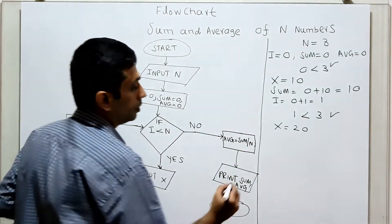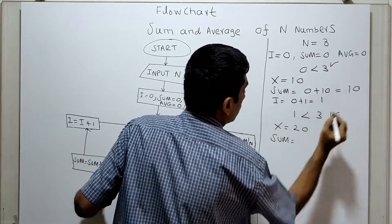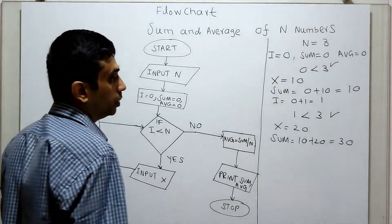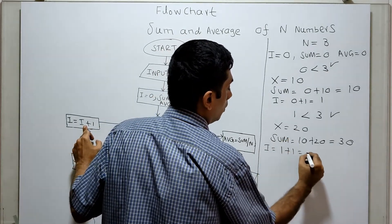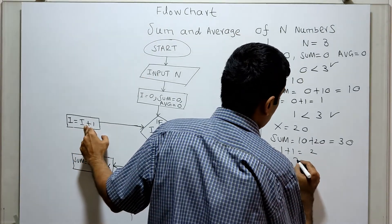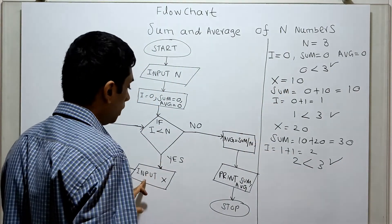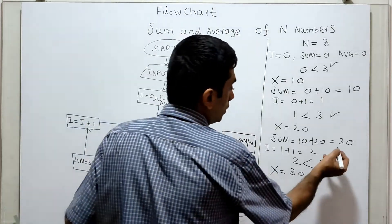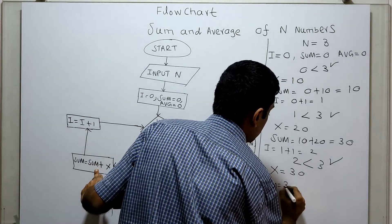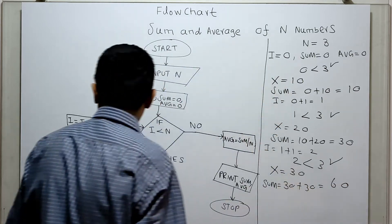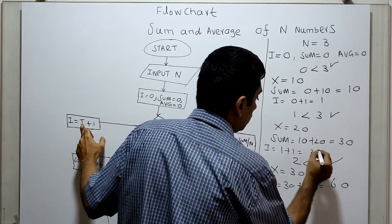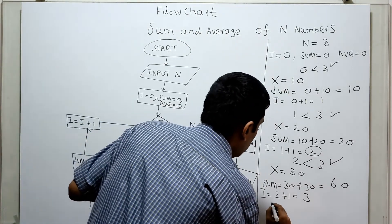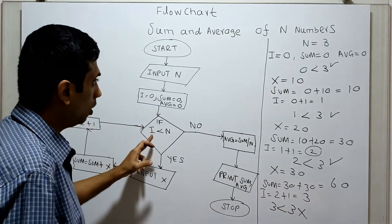sum equal to sum plus x — existing sum is 10, so 10 plus 20 equal to 30. Incrementing i: 1 plus 1 equal to 2. Checking: 2 less than 3 is true. Obtaining input x equal to 30. sum equal to existing sum 30 plus 30 equal to 60. Incrementing i: 2 plus 1 equal to 3. Checking: 3 less than 3 is false — coming out of the loop.